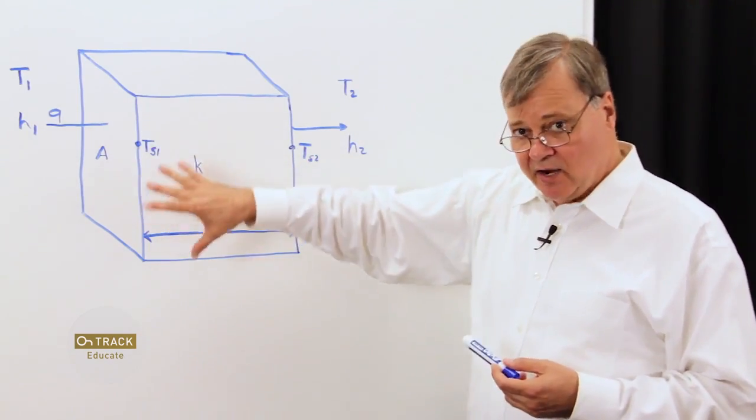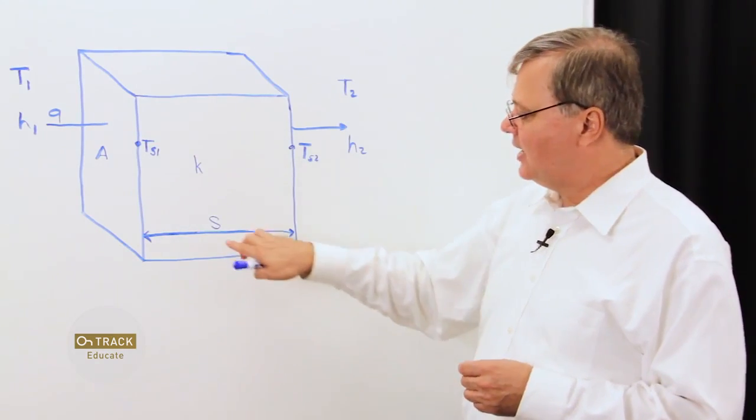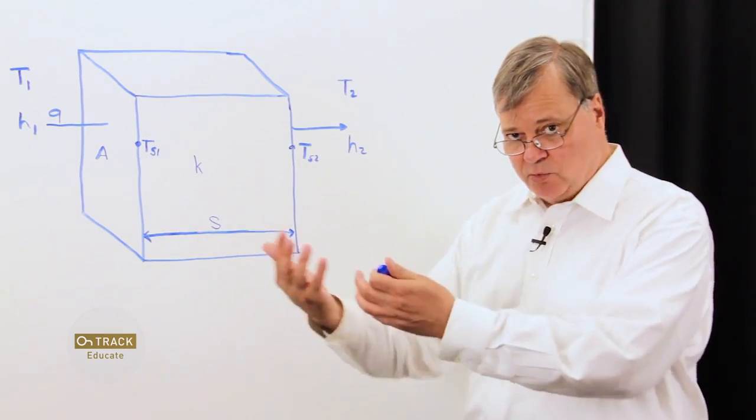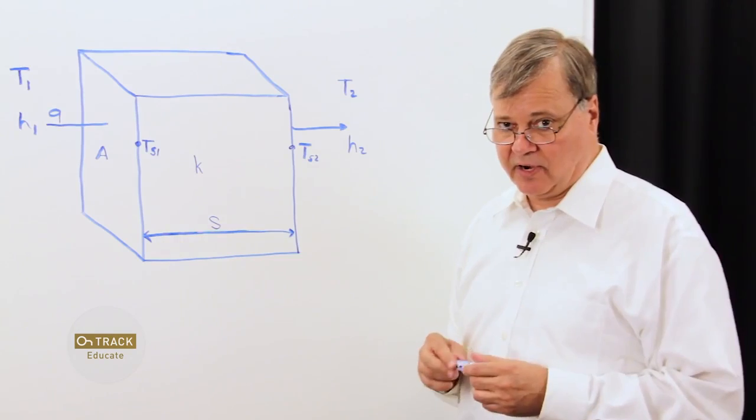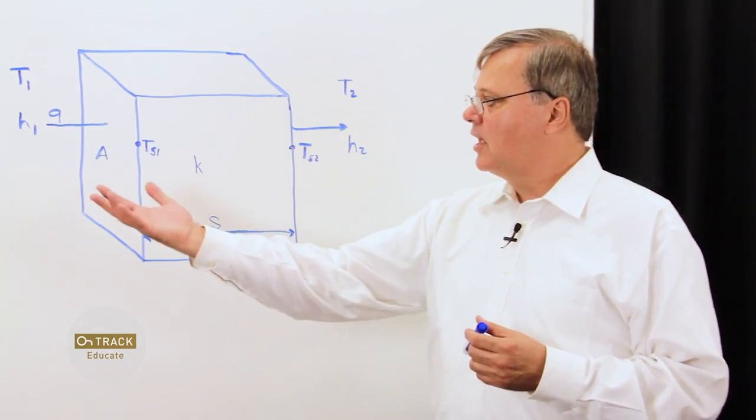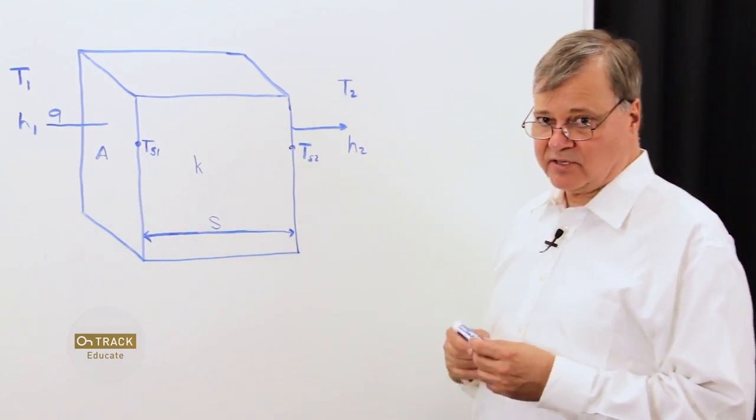A is the surface area of my solid material, and S is the distance that the heat transfer through the solid material. And we're going to look at the thermal stack-up of the entire system.